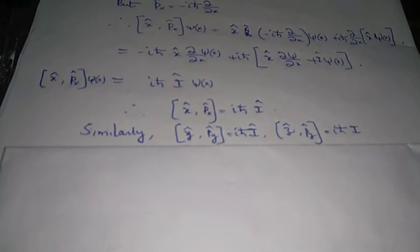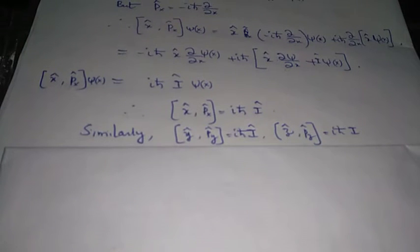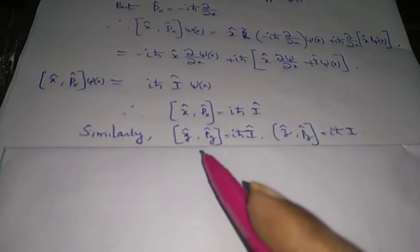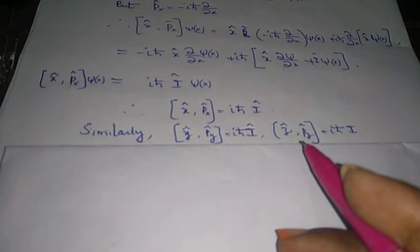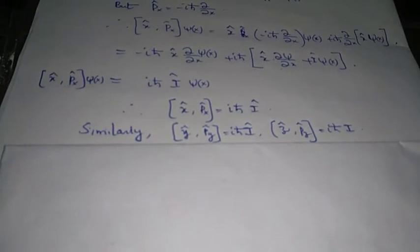If we had considered a three-dimensional wave function, we could have similar relationships between y and p_y, and z and p_z, resulting in iℏ times the identity.